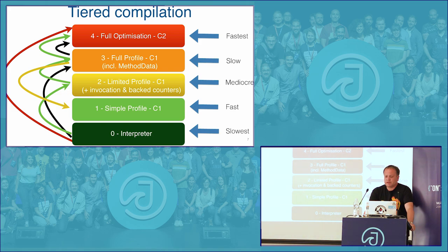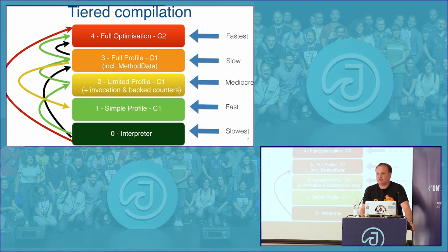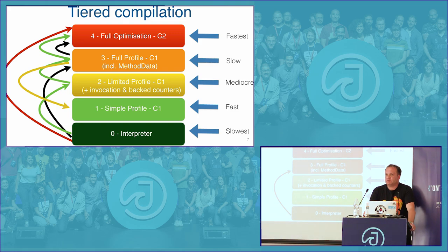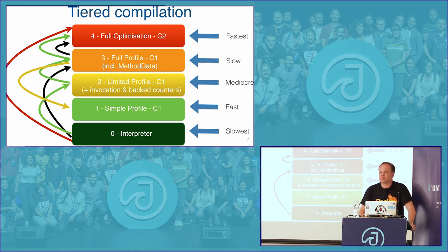When you start an application, you typically start with the interpreter. After a method heats up a little, the JVM recompiles it with C1 with full profiling. When that runs for a while and collects more profiling data and the VM observes it as hot, it enqueues it for Tier 4 C2 compilation. When that happens, the method is promoted to Tier 4, and that's what we want to run.